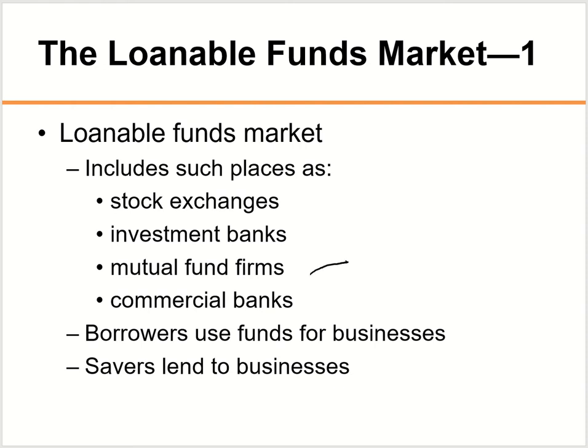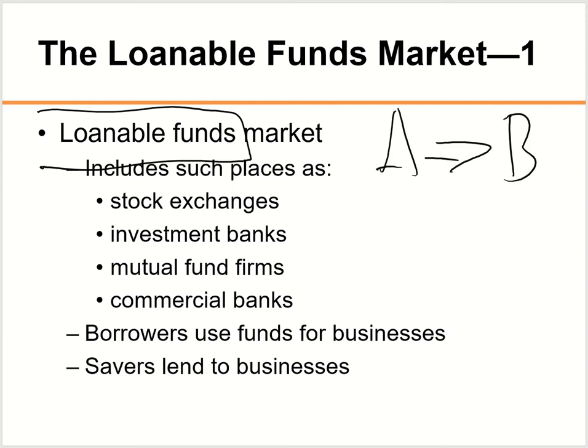Then you have mutual fund firms — companies like Charles Schwab or Invesco — which take investors' money and then purchase or offer mutual funds for sale. You also have investment banks; the most well-known is Goldman Sachs, which takes investment money from investors and offers investment in all kinds of areas. And lastly, your Stock Exchanges — the New York Stock Exchange, Dow Jones, Nasdaq — are also part of the loanable fund market because they take money from one investor and give it to somebody else.